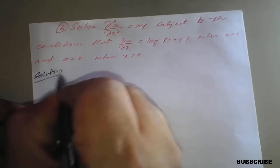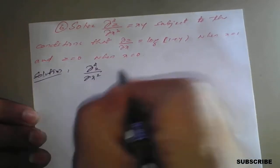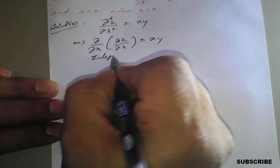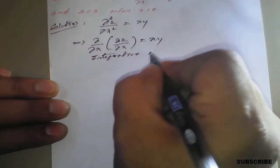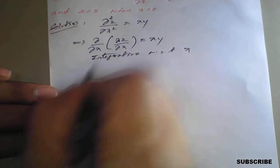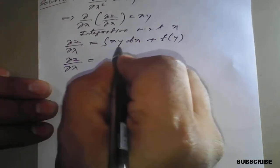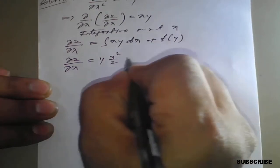The solution starts from ∂²z/∂x² = xy. This can be rewritten as ∂/∂x of (∂z/∂x) = xy. Integrating with respect to x, the ∂/∂x operator vanishes, leaving ∂z/∂x equal to the integration of xy with respect to x, plus an integrating constant f(y). Keeping y as a constant, integration of x gives x²/2, so we get x²y/2 + f(y).